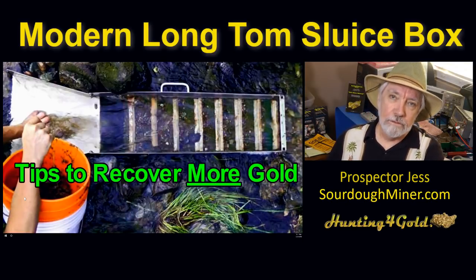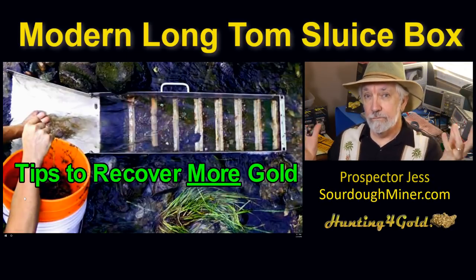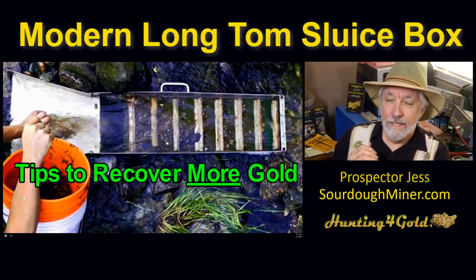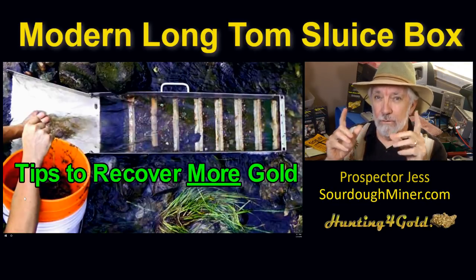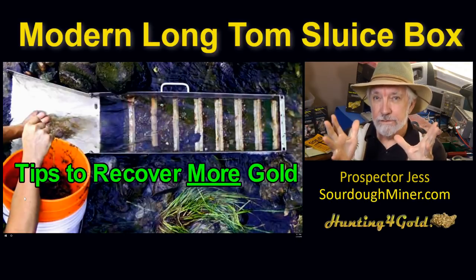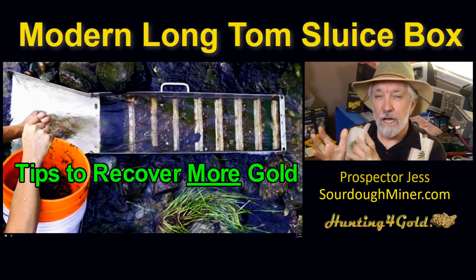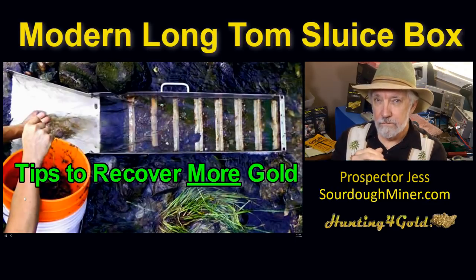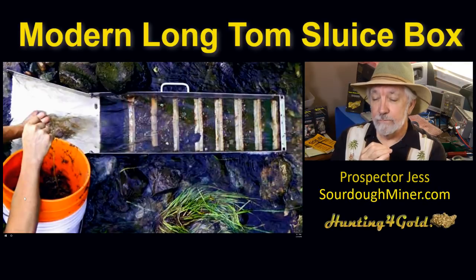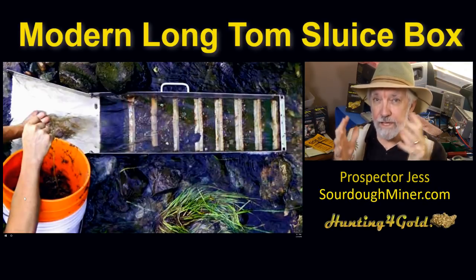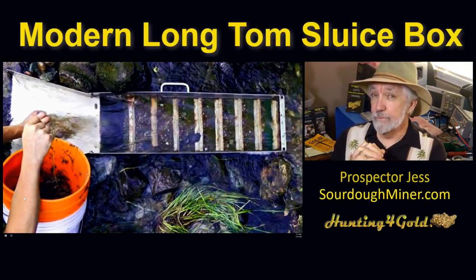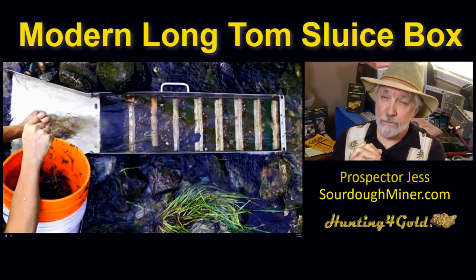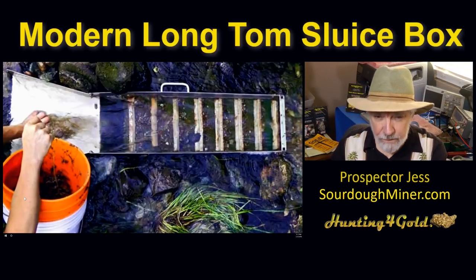Now if you know anything about gold history, you'll know about long toms. These are sluices that go for very long distances and can be used to separate out gold in a specific way. But what you want to be aware of is how a gold sluice impacts the kind of gold you're going to be recovering. Different kinds of gold sluices have different advantages, and that's something very important to have in your arsenal because you may not be using the right type of sluice where you're prospecting for the kind of gold you're looking at.